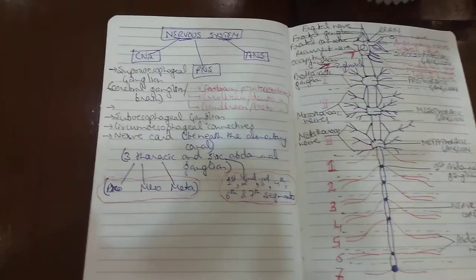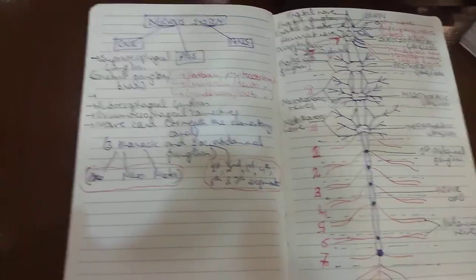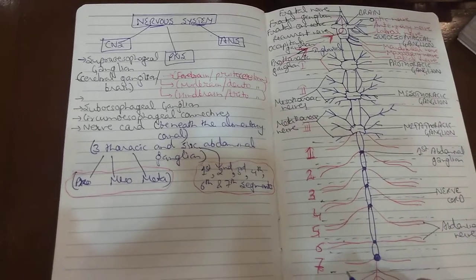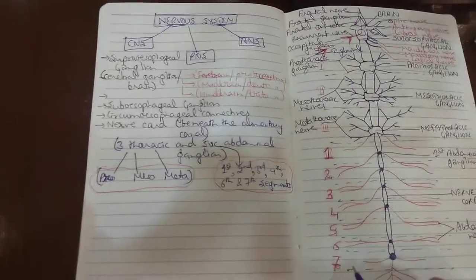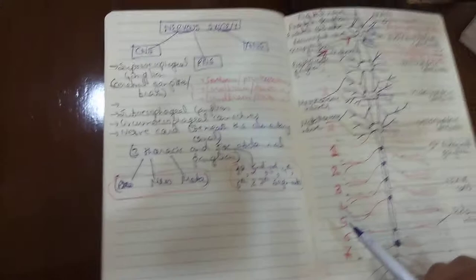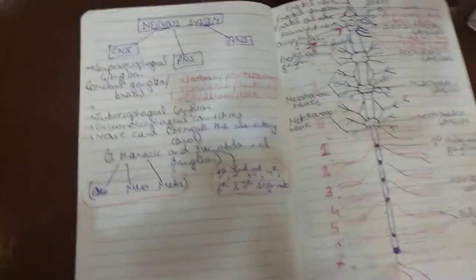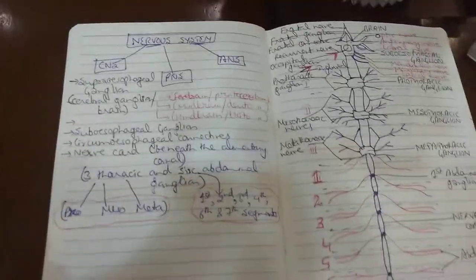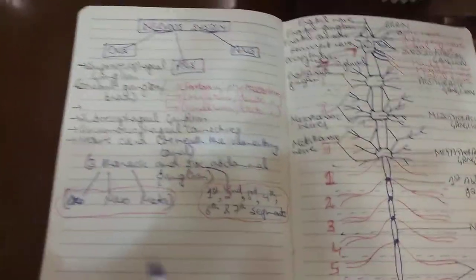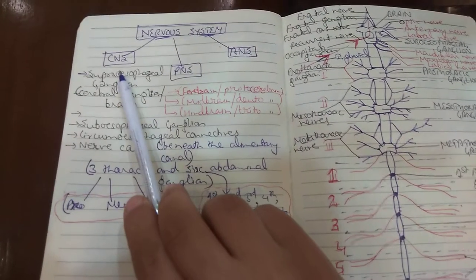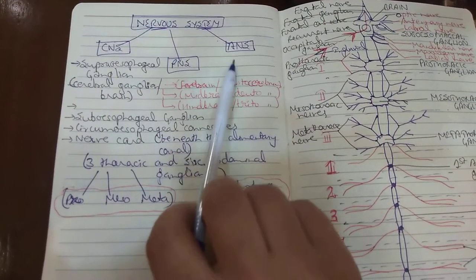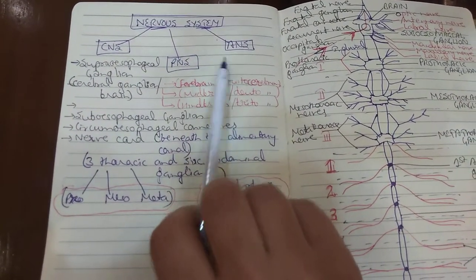Next comes the nervous system. The nervous system is the system involved in bringing about the coordinated movements of the body and bringing about reactions to different kinds of stimuli. The nervous system in the case of cockroach has three parts: the central nervous system, the peripheral nervous system, and the autonomic nervous system.